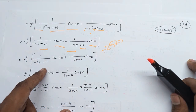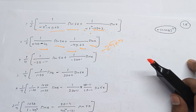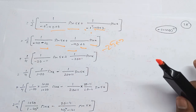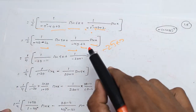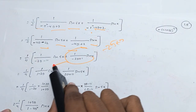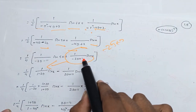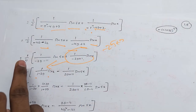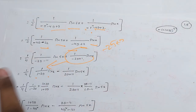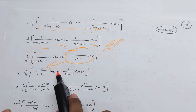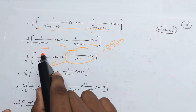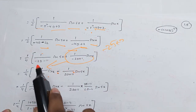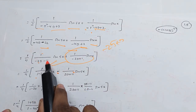So we have 1 by 2, then minus 2 divided by 2. Minus by 2, controlling the same value.